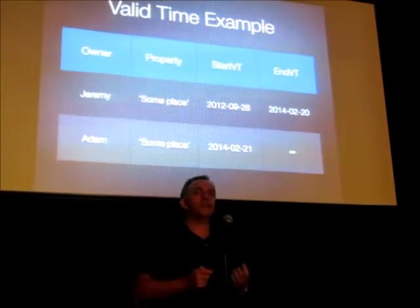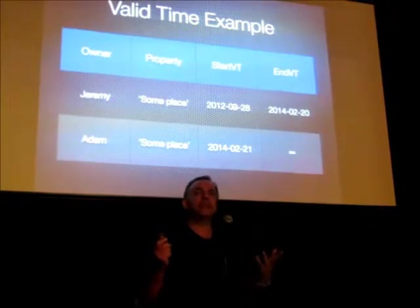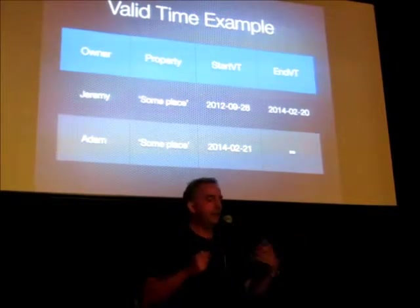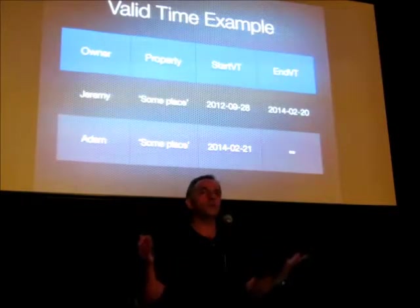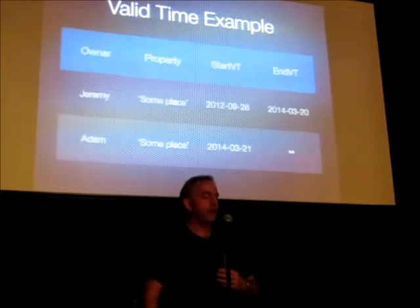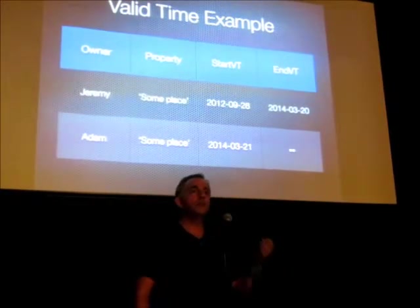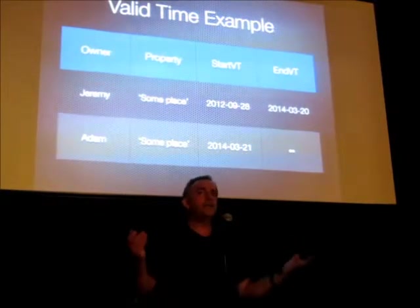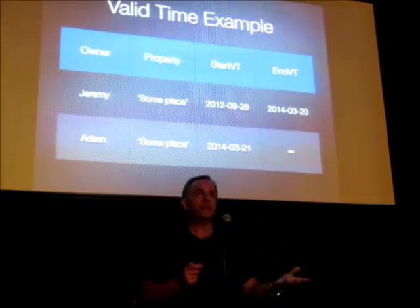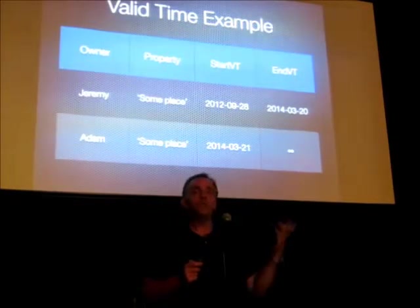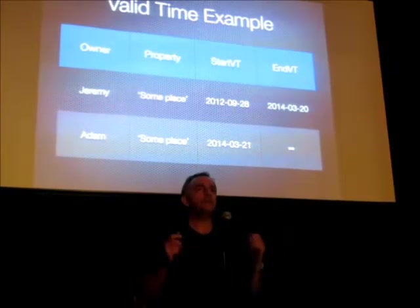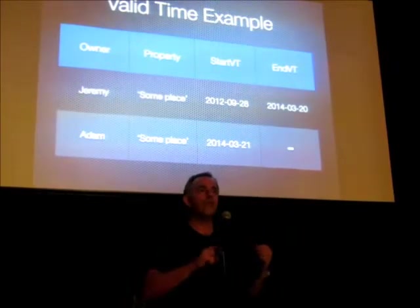However, there's an extra complication. Let's say we made a mistake — we inserted this data back in 2012 when I owned the property, and then changed it in 2014 when I stopped owning it. The problem is we got the date wrong: instead of stopping owning it in February, I actually stopped owning it in March. So the period of time is wrong. One way is to go back and change the valid time — so now we say I stopped owning it on the 25th of March 2014. But the issue is that we have now lost the ability to ever know that the data was ever stored as anything else.